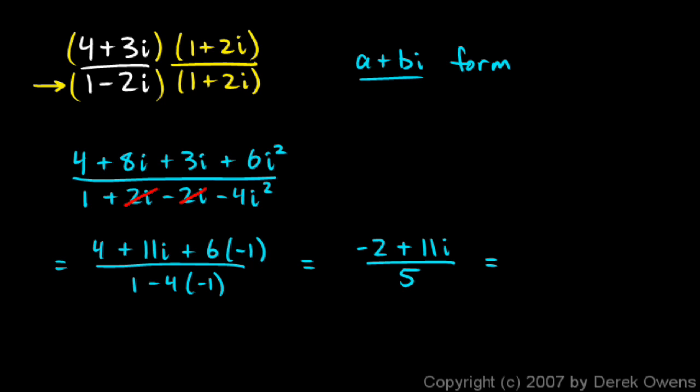So I've simplified it a lot. And let's go one more step. Let's write it like this: negative 2 over 5 plus 11 over 5i. And that's our answer. And notice the form that I have it in, a plus bi. a is negative 2 fifths, and b is 11 fifths. So this is in standard form.